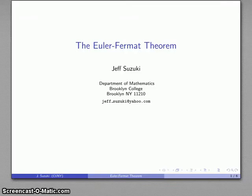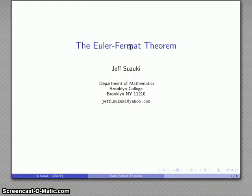Let's take a look at what's generally regarded as the first really important result in number theory. This goes by the name of the Euler-Fermat theorem, because it was first noted by Fermat, a 17th century mathematician, but Euler, an 18th century mathematician, was the first person to actually do something with it beyond just making the observation.